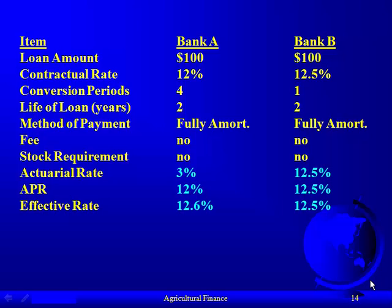We've now completed the analysis for Bank A and Bank B, which were the easiest. Comparing them: if you look at the APR, Bank A appears lower at 12% versus 12.5%, and you'd choose A. But once you calculate the effective rate — accounting for the fact that one is quarterly and one is annual — the comparison changes. You can't use the APR to compare loans if they have different conversion periods. Even though your congressman says it's okay, there's another level you have to look at.